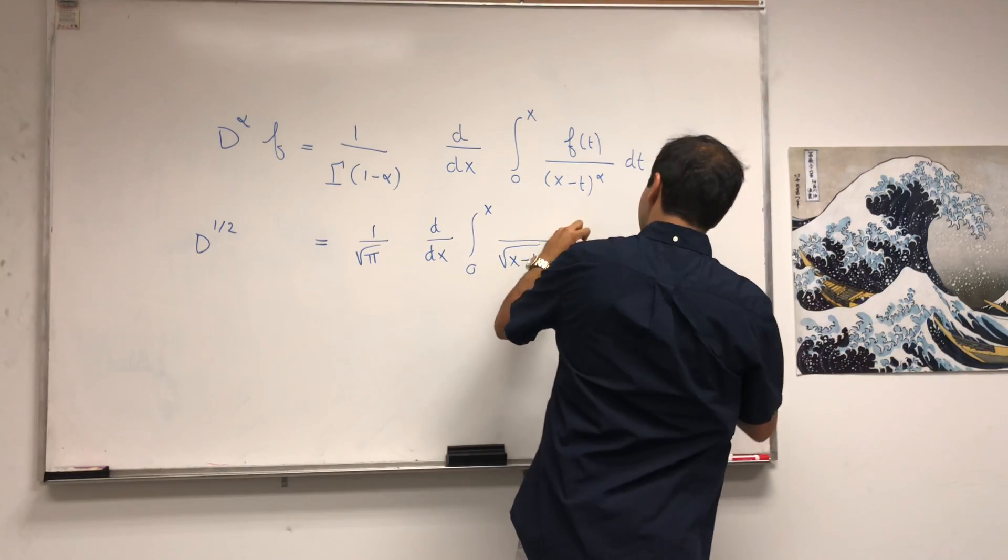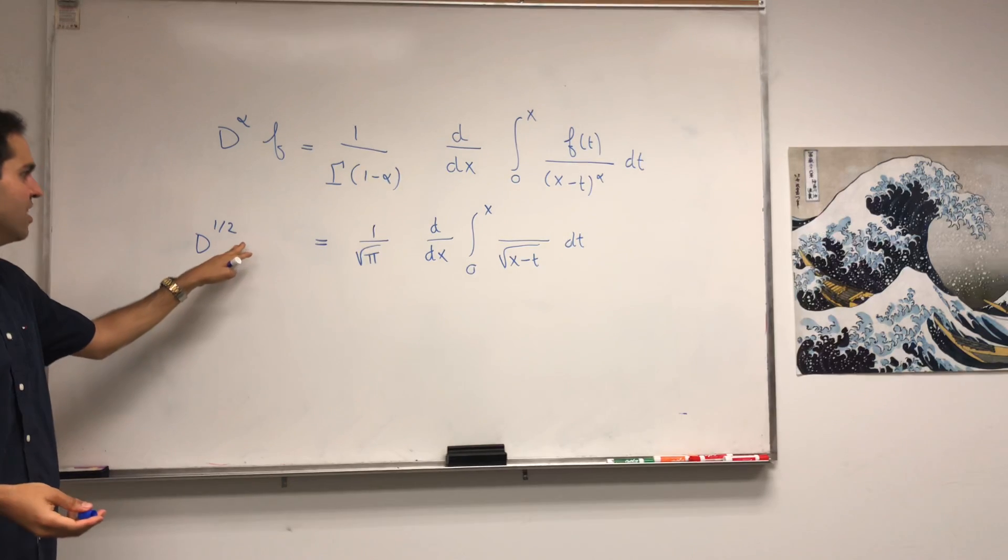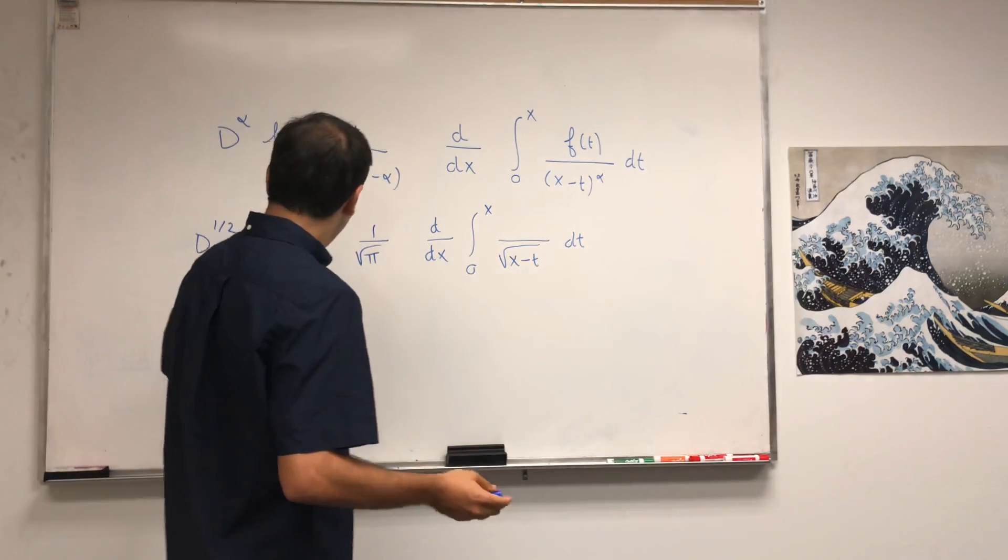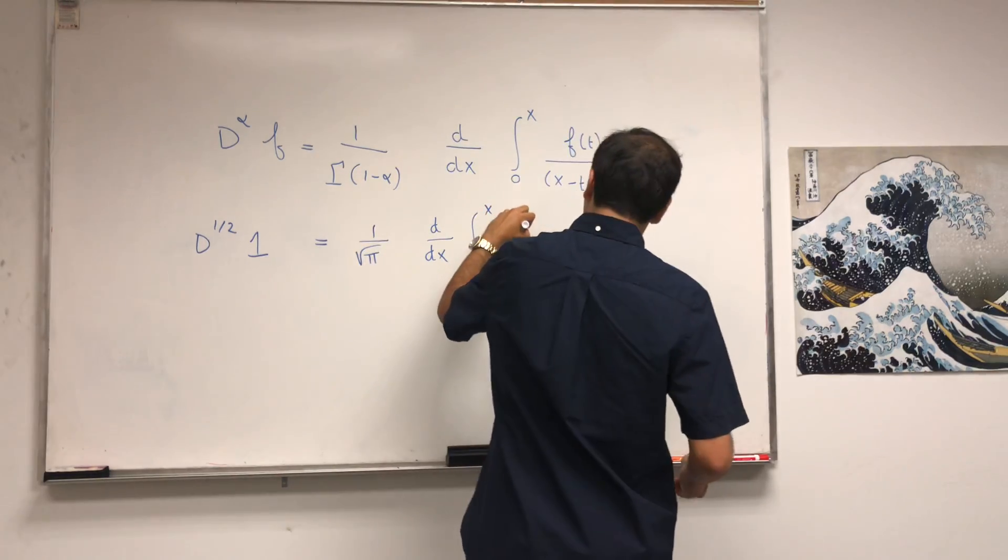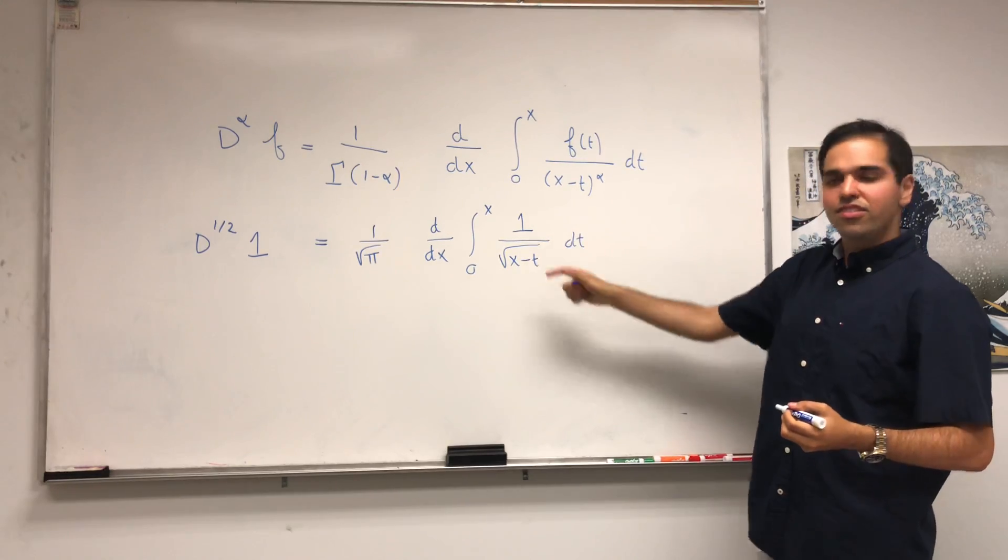You still have d/dx integral from 0 to x of, in this case we get square root of (x-t) dt. That's in general, but the question is what is the function here? The function is just 1 because we want to find the half derivative of 1.